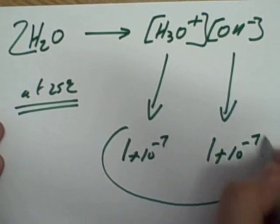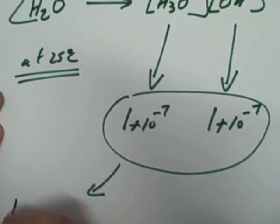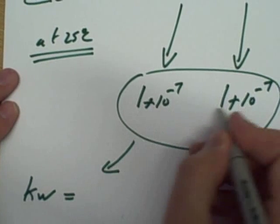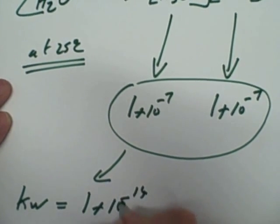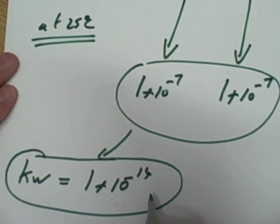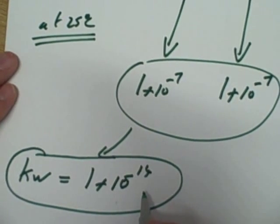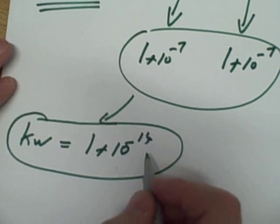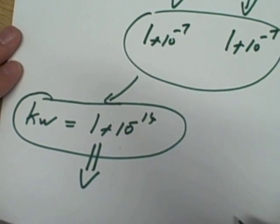Now if you bring these two together, we've got a value of Kw. Bring them together, 1 times 10 to the minus 14, the ionic product of water. Now that is a tiny number, 1 times 10 to the minus 14. So it's no surprise here that we want to make our lives a little bit easier.